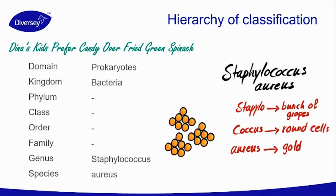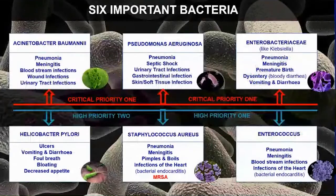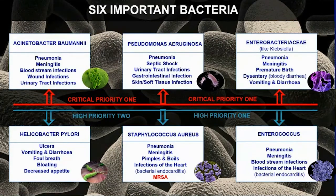There are two types of bacteria: gram-positive and gram-negative. Gram-negative are harder to kill than gram-positive, and the differences are mostly due to their outer layer — the structure of the membranes is different. By a simple staining method in the lab, we can differentiate gram-positive from gram-negative. There are many gram-negative bacteria of concern in healthcare, but only few gram-positive. Six important bacteria include Acinetobacter baumannii, Pseudomonas aeruginosa, Enterobacteriaceae, Helicobacter pylori, Staphylococcus aureus, and Enterococcus. Many illnesses such as pneumonia or meningitis can be caused by more than one bacteria, and some are really threatening.